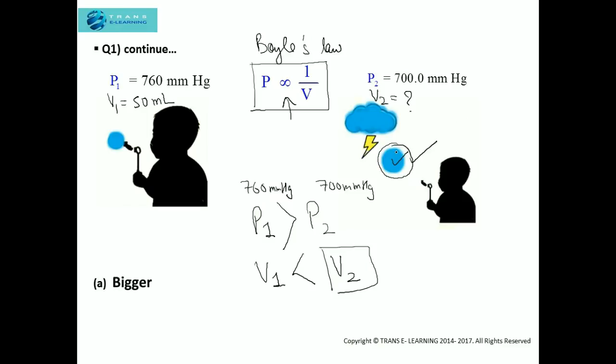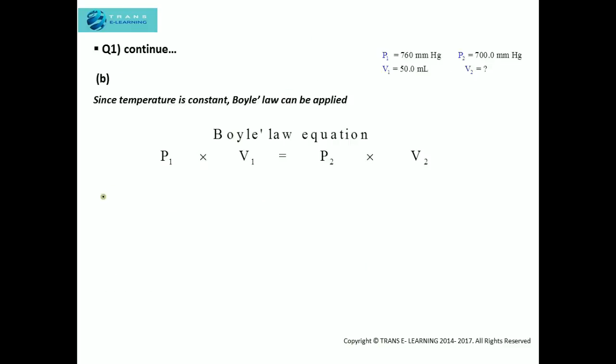The second question now is to find what will be the new volume of the bubble at this pressure when the storm arises. Now I will just substitute the values in the Boyle's Law equation. That is P₁ = 760 mmHg × V₁ = 50 mL equals P₂ = 700 mmHg × V₂.